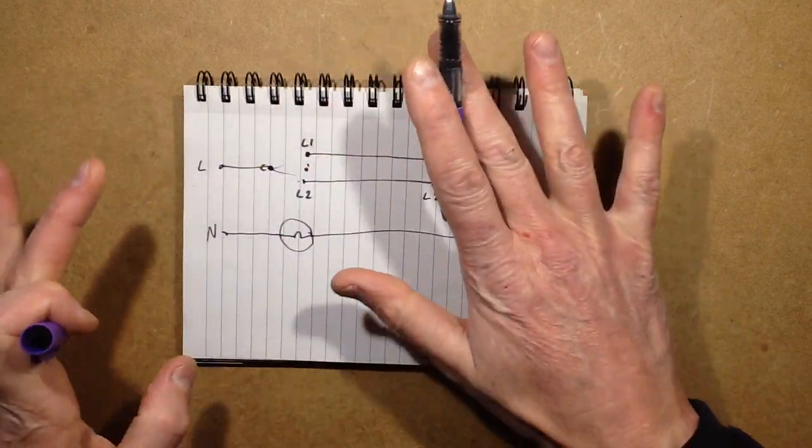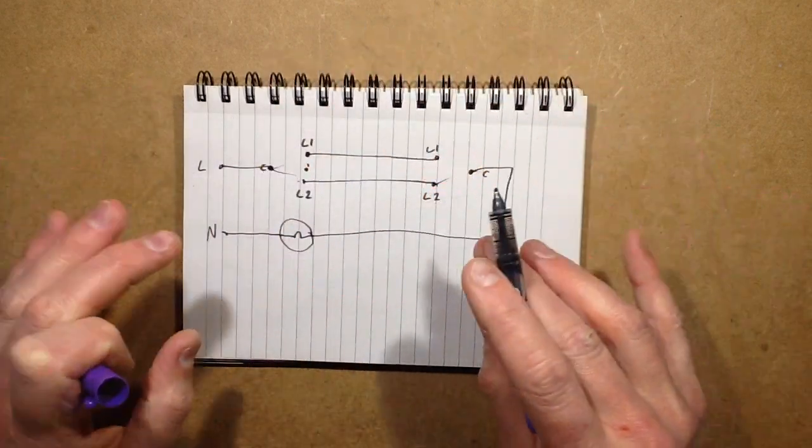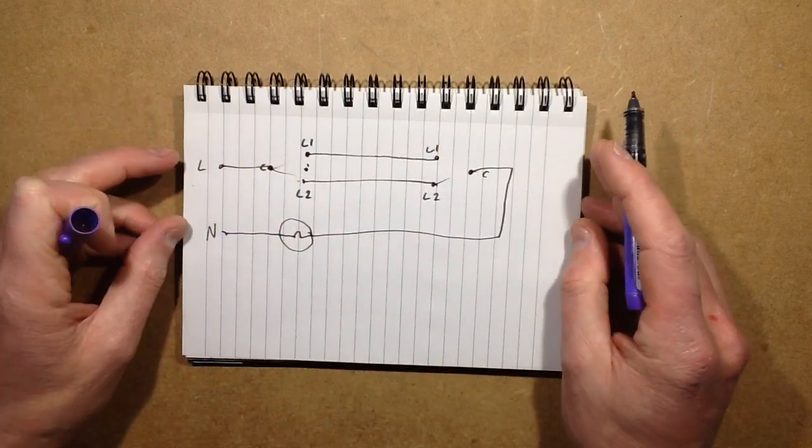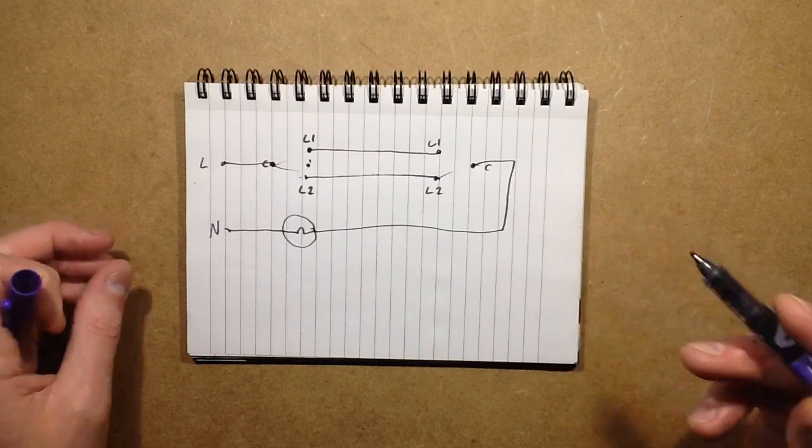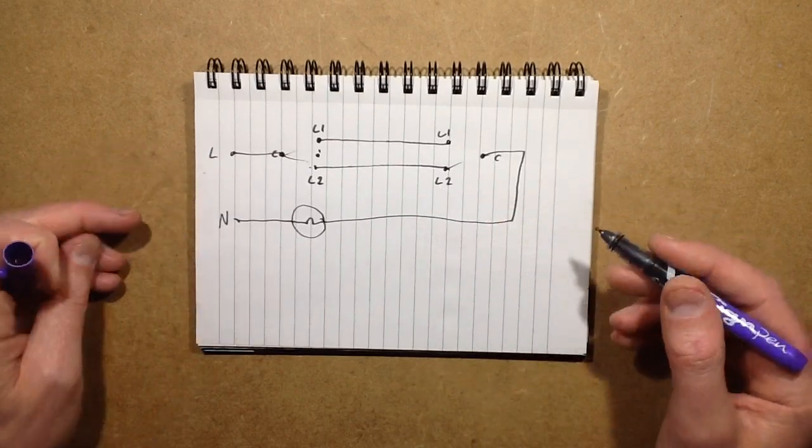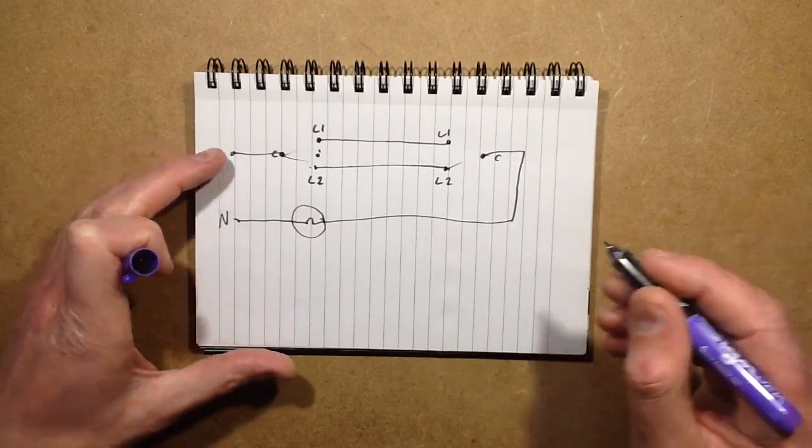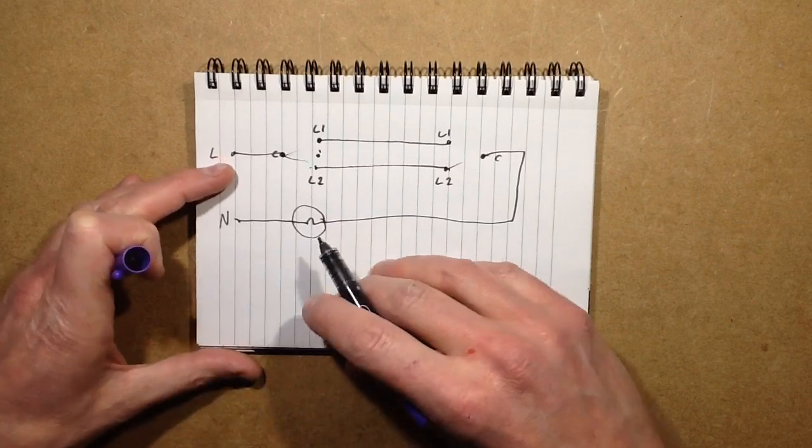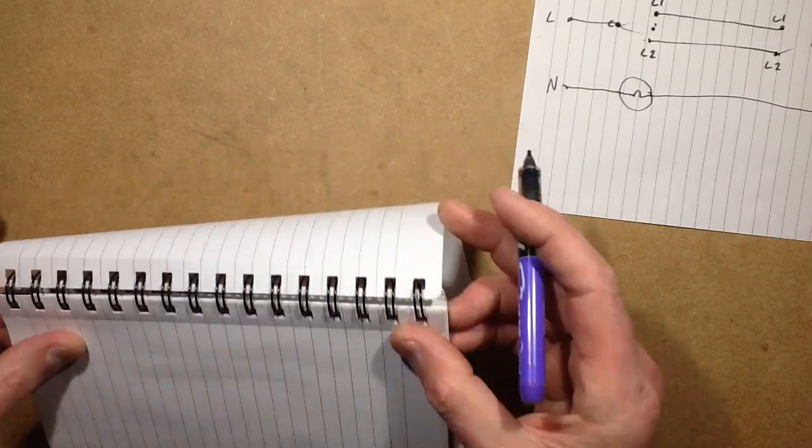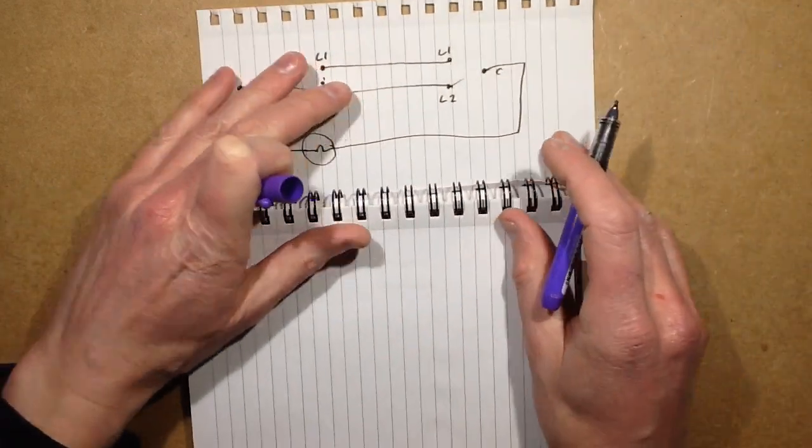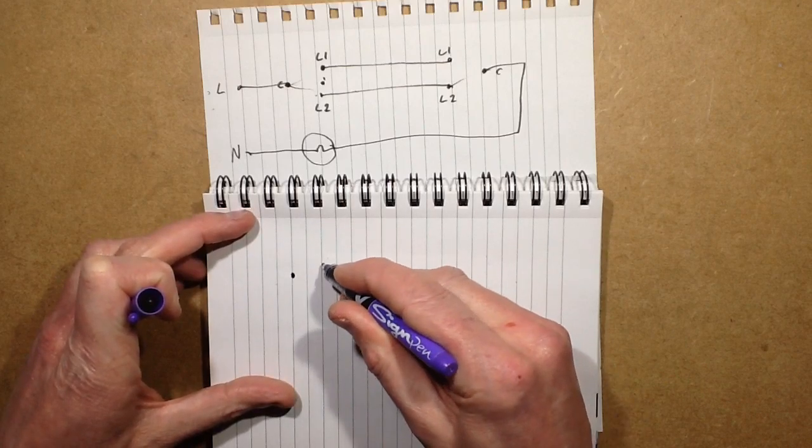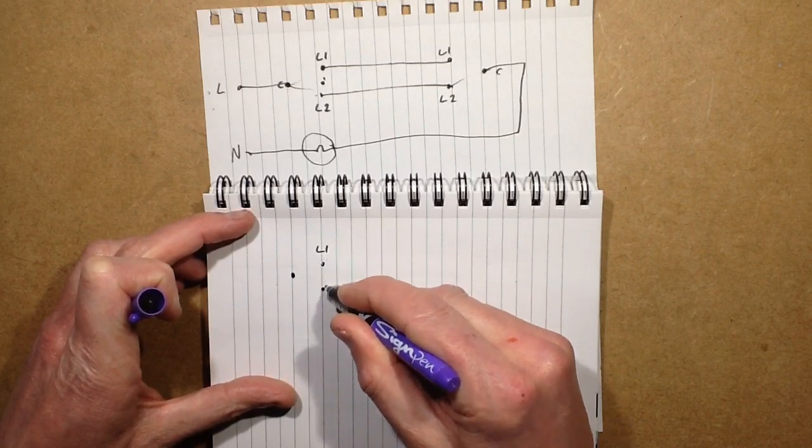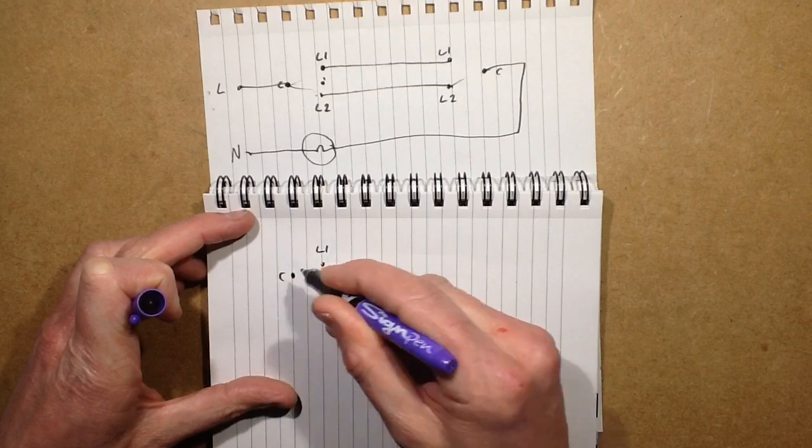And I'll come back to the three-way switching afterwards because once you realize how it works, it's really easy and it'll be like a little epiphany moment. So the other approach and I prefer this approach for wiring. You've got your two-way switches, L1 L2 and common.